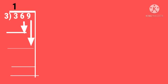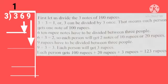3 divided by 3 is equal to 1. Or, 3 can be divided by 3 once. That means, each person gets 1 note of 100 rupees. So, 3 minus 3, 0. Next is what? 6.